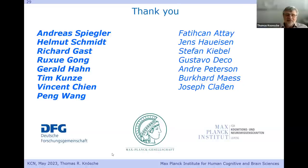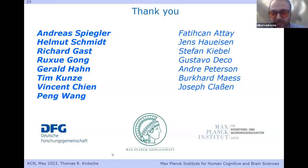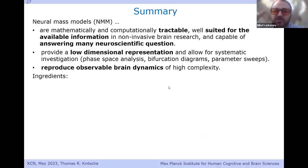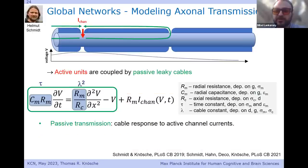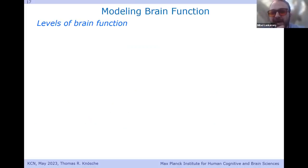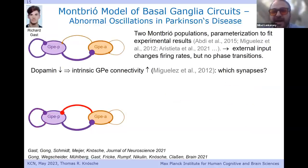My high-level question: when you showed the basal ganglia GPe model using the quadratic integrate-and-fire framework with all those connectivities, and in your outlook you mentioned adding further constraints and details — is there a systematic way to add details to neural mass models, or is there a hard limit where you'd say this is too much detail?